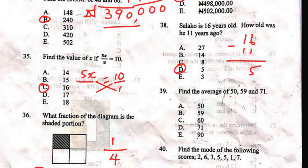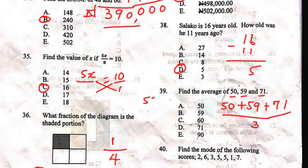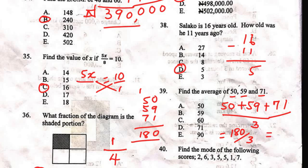Question 39: find the average of 50, 59, and 71. To find the average, sum up the items and divide by how many there are. 50 plus 59 plus 71: 9 plus 1 is 10, carry 1; 5 plus 5 plus 7 is 17 plus 1 is 18. Sum is 180. Divide by 3 to get 60. The correct answer is C.